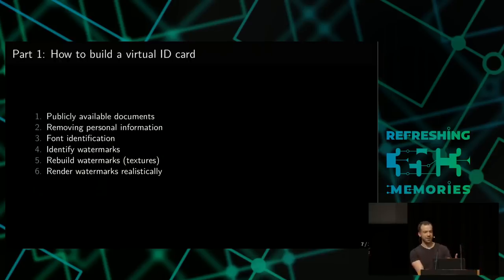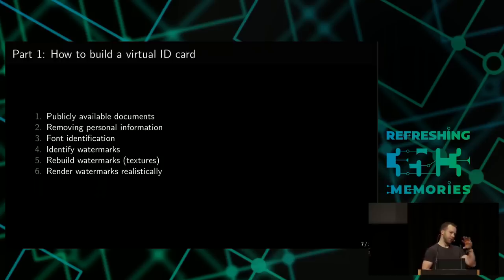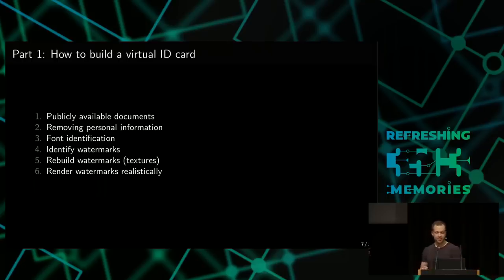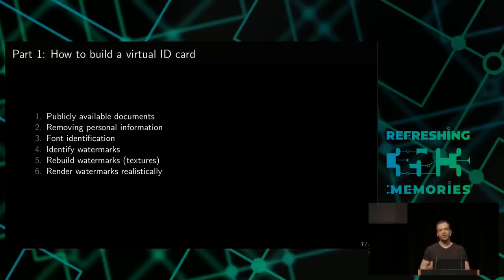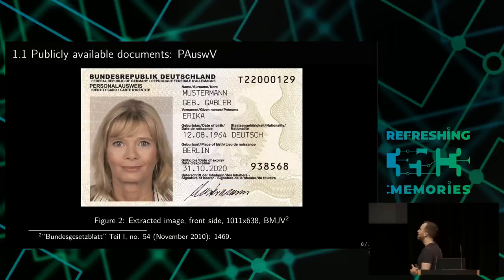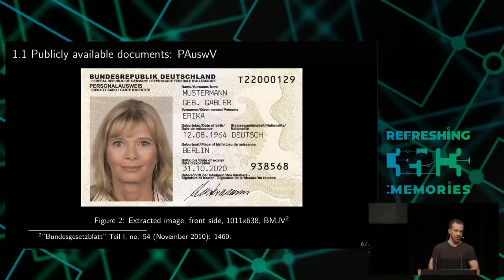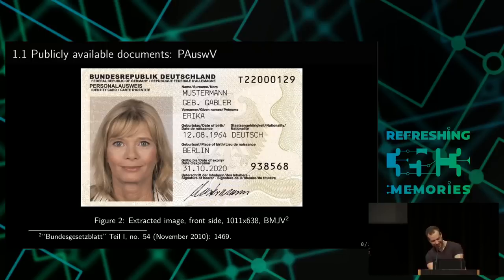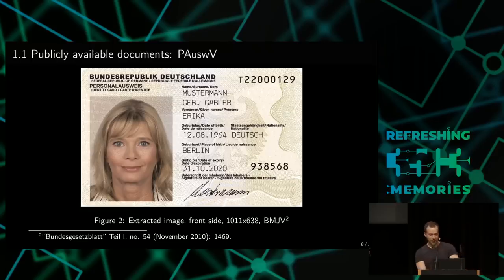Now let's talk about how we generate the textures. We scan some publicly available documents, find out how to remove the sample text like 'Erika Mustermann', find out which fonts are used on the real documents, talk about the watermarks, how to generate our own watermarks, and then how to render the card. There's a law called Personalausweisverordnung which contains sample images. If you right-click and press save, you get high-res sample images without any watermarks — we can work with that. Same for the back side.